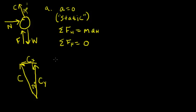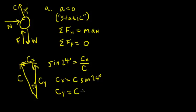So I know that the sine of 24 degrees is going to be equal to the side that is opposite, which is CX over the side that is the hypotenuse, or C. So I can say that CX is equal to C times the sine of 24 degrees. I could also say that the cosine of 24 degrees is equal to CY, the adjacent side over the hypotenuse. Or I could write that the vertical component of C is equal to C times the cosine of 24 degrees.